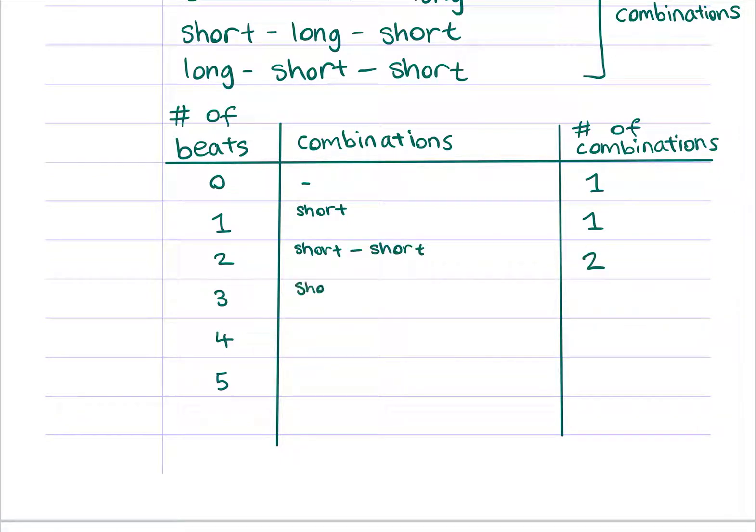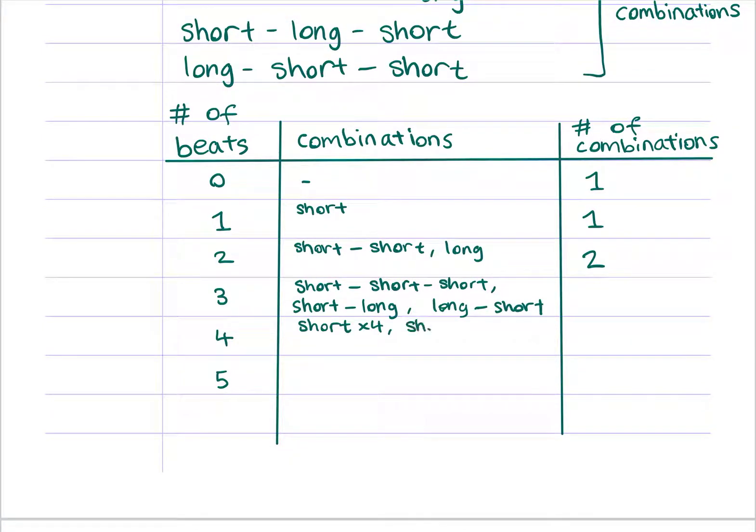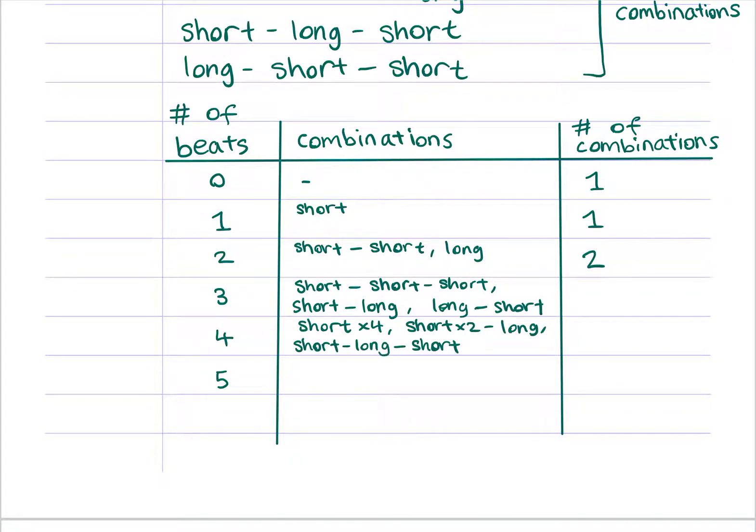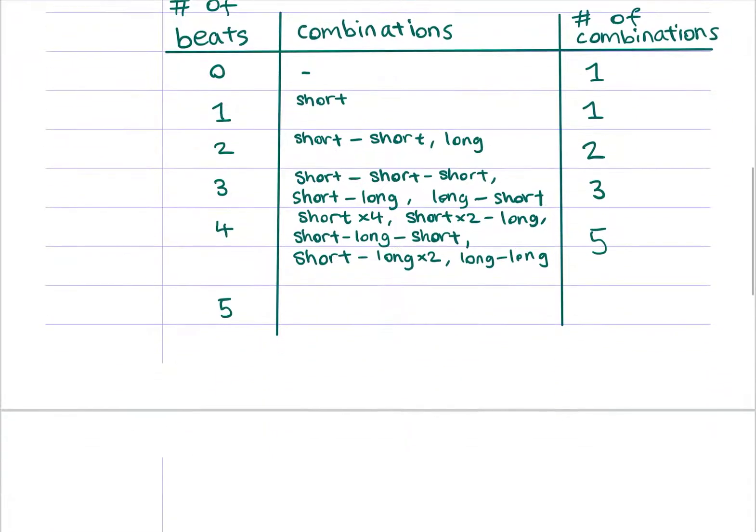For a three-beat rhythm, there are three combinations: three short, one short and one long, and one long and one short. We've already done the four-beat rhythm, so I'm just going to put this here. All the possible combinations are shown here. For the five-beat rhythm, we have eight combinations, as shown here.